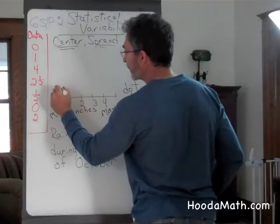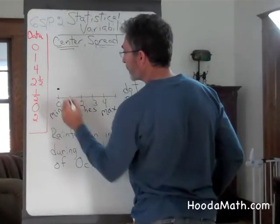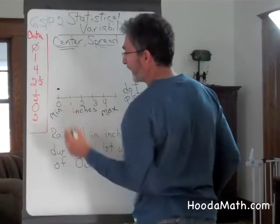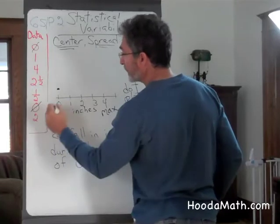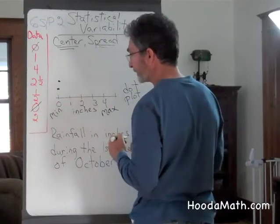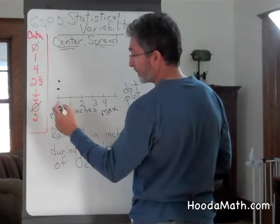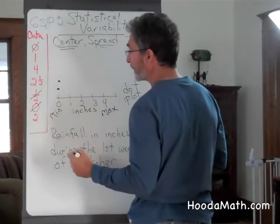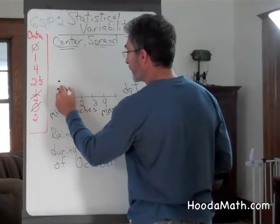Zero, we put a dot for that. There's two days where we had zero rain falling. The next, we had one half inch of rain happen one day.